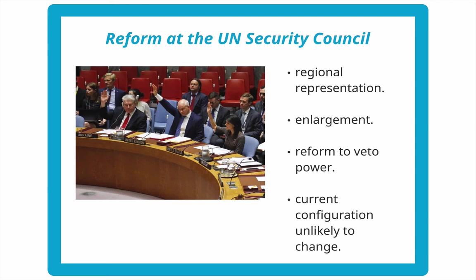There have been calls for reform to veto power. Some have said we should do away with veto power altogether — that you shouldn't have five countries who can effectively veto the voice of the international community. But it is very unlikely that the current configuration of power will change. Even if we enlarge the UN Security Council, it's very hard to ask powerful countries to give up the ability to veto the decisions of the rest of the council. Even though some P5 countries recognize the need for reform, it's a very hard sell to say we're going to give up this enormous power in this global institution. There are a number of proposals on the table, and perhaps in 50 or 60 years we'll see a significantly reformed Security Council.